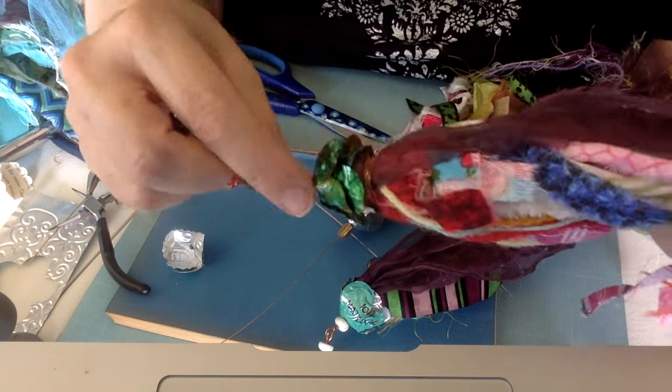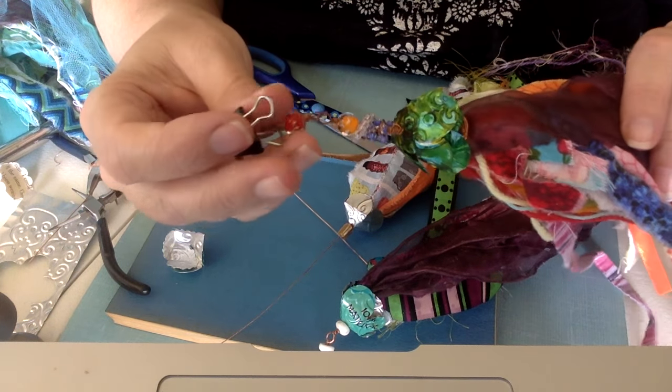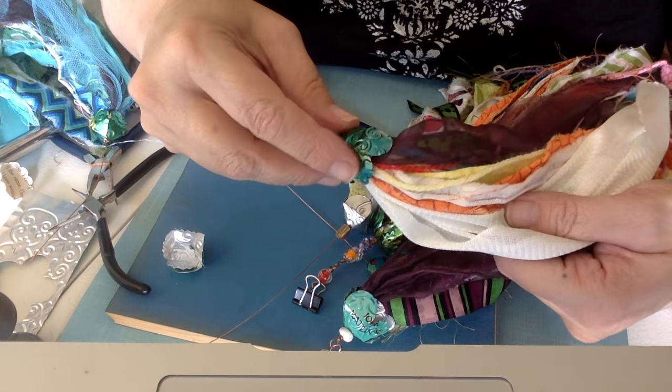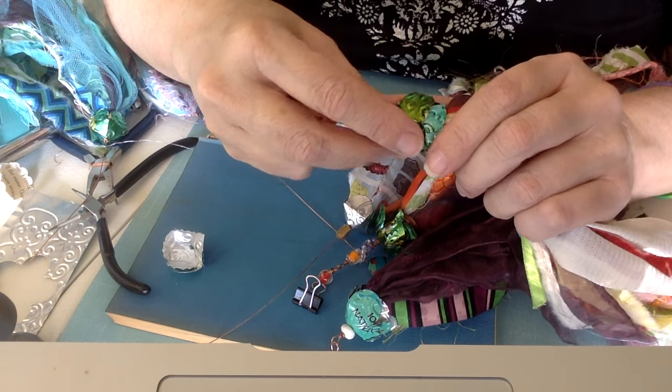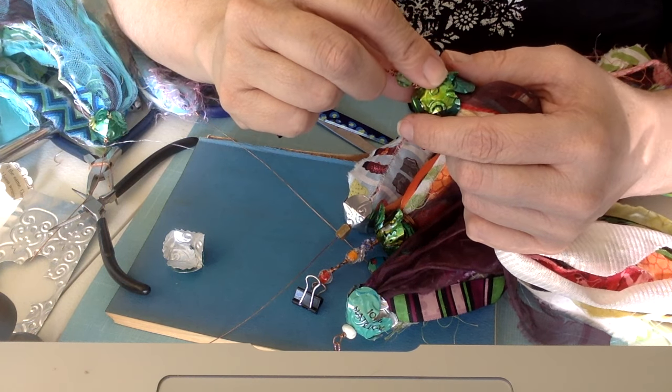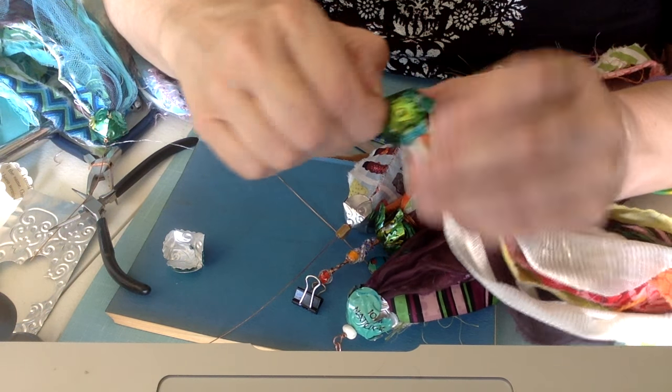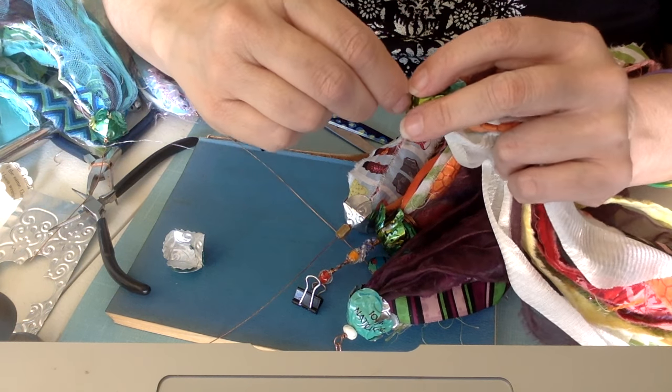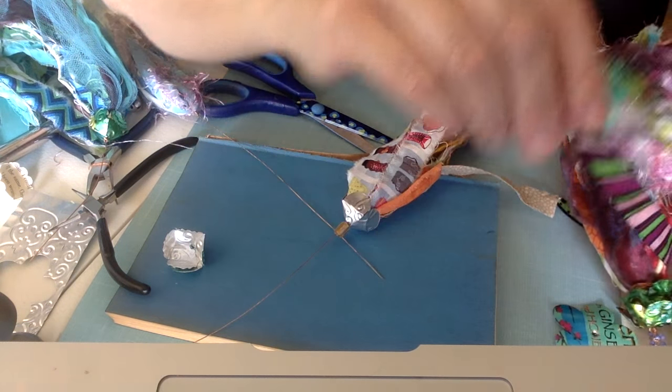This is a double bead cap, also alcohol inked and then the beads were added in a clip for the journal and this one's similar. Now, I like the fact that it moved. If you don't, get your dimensional glazes out. Your diamond glaze or your stickles or your glossy accents and paint the top of the bottom bead cap and then maybe you would want to use a little washi tape. Washi tape it down until it totally dries and then you won't have any movement.